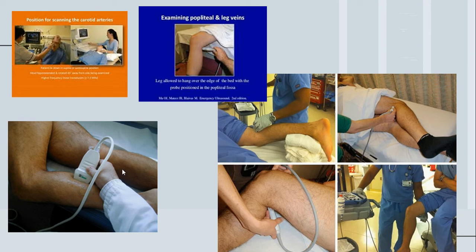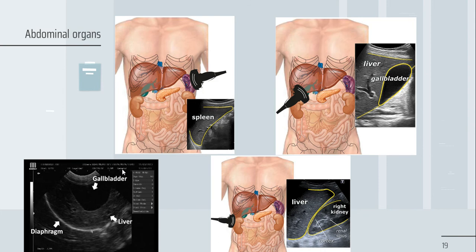Moving on, we'll talk about abdominal organ ultrasound. This is a normal abdominal ultrasound showing the gallbladder and liver. Depending on the position of the probe, the view of the organs changes — here you can see the spleen, here the liver and gallbladder, and here the liver and right kidney.